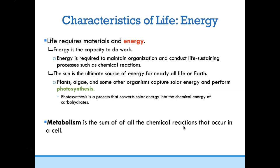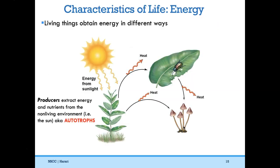Living things obtain energy in different ways. The sun is the ultimate source of energy. A plant is referred to as a producer because it can produce its own energy. A producer extracts energy and nutrients from the non-living environment — the plant extracts energy from the sun and materials from the soil. These are called autotrophs because they automatically make their own energy.